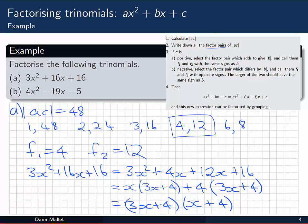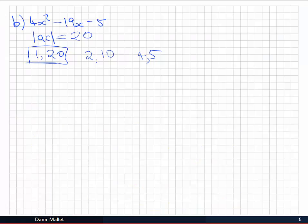We call those f₁ and f₂, choosing the larger to have the same sign as b. The larger here is 20, so we give that the same sign as b, a negative. f₂ = 1 will have the opposite sign.